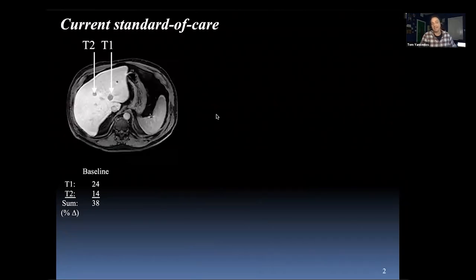What you're looking at right here is an axial cross-section of an x-ray CT. You can make out the abdominal aorta here, the vertebral column, this is the liver, and there are these two conspicuous lesions — call them tumor 1 and tumor 2 — here on the liver.